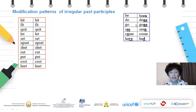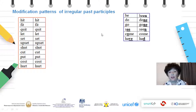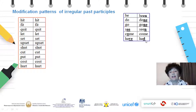Be — been, do — done, go — gone, see — seen. Come, came, come: come and run belong to the pattern where the first and the third form are the same, but in the middle — in past simple — there is a change. And then have turns into had.